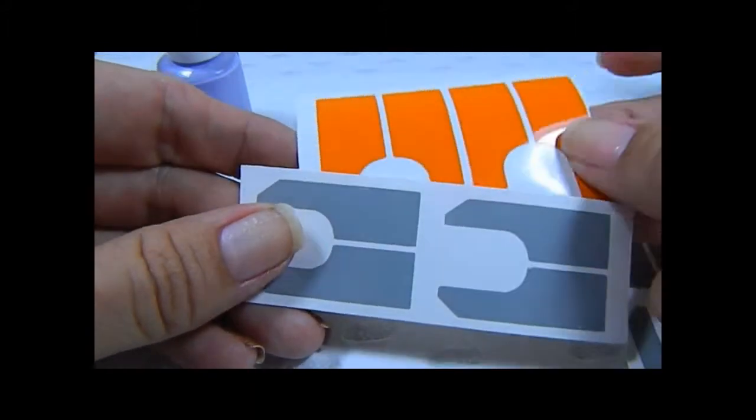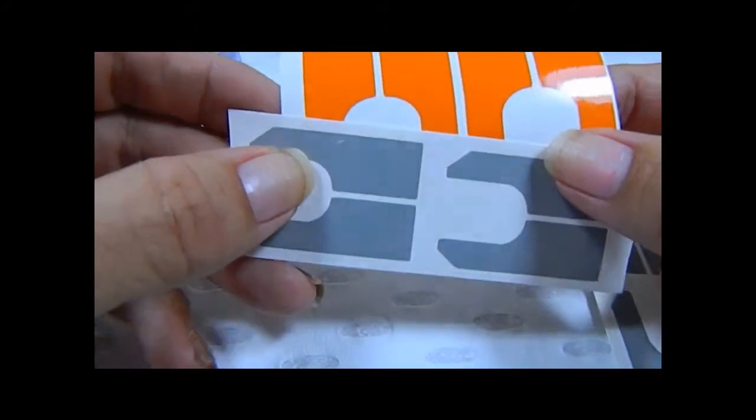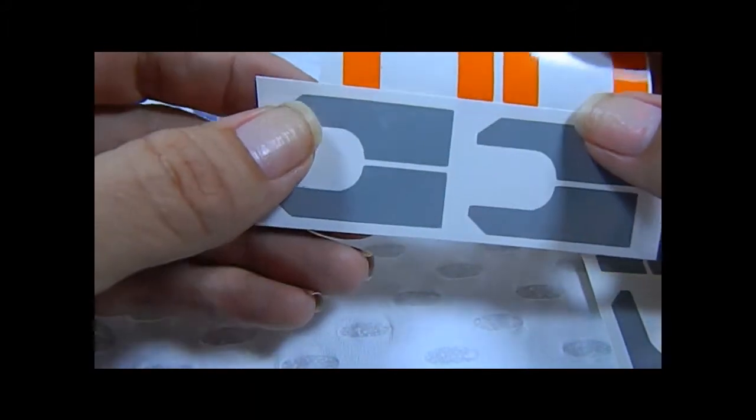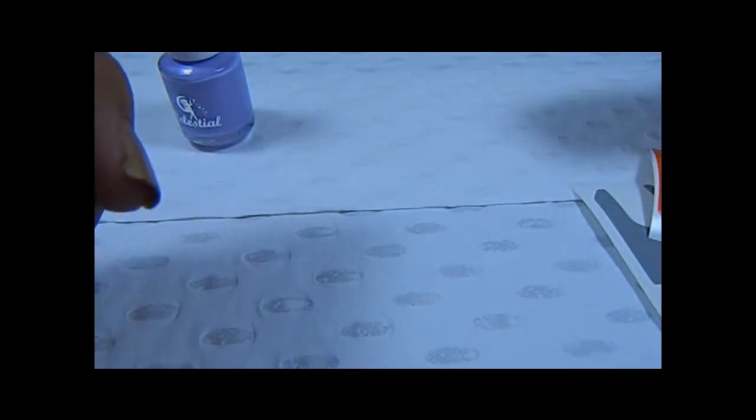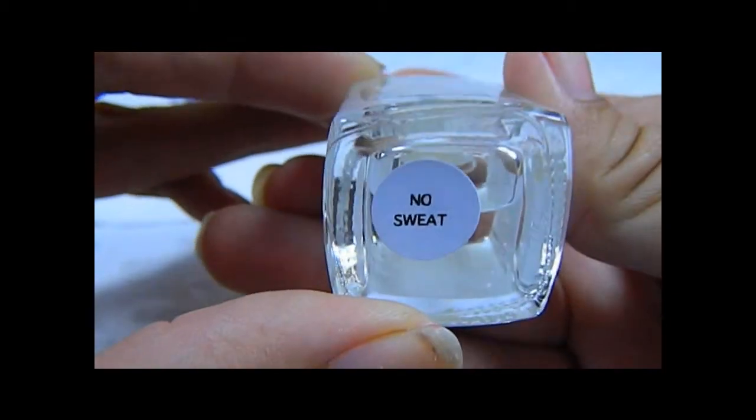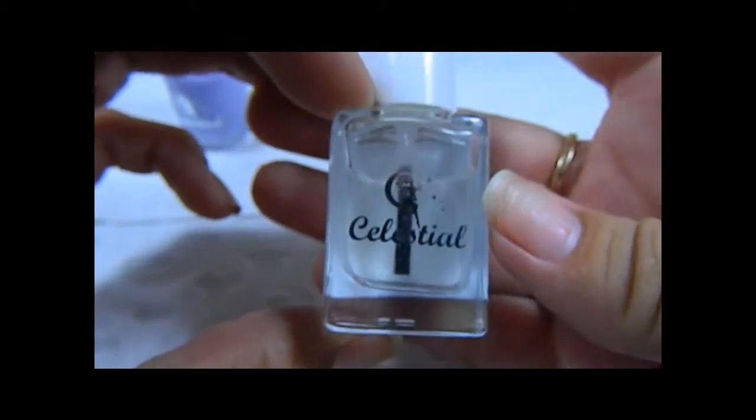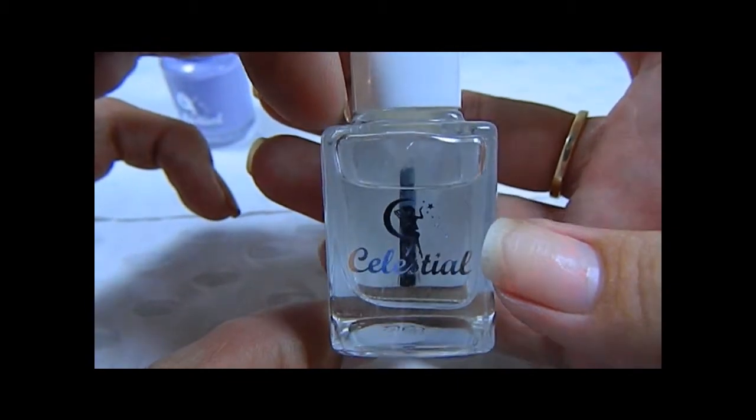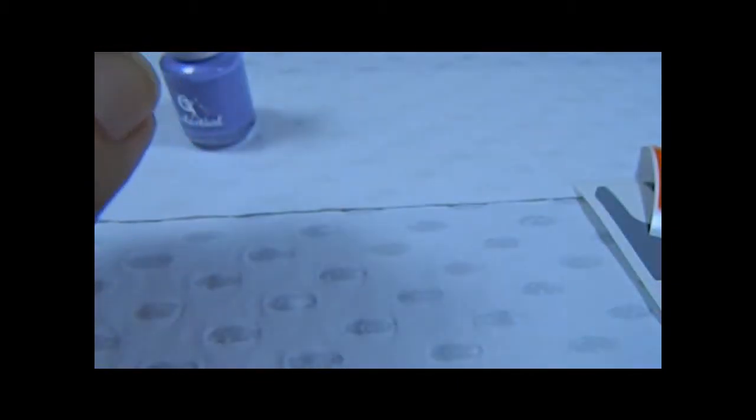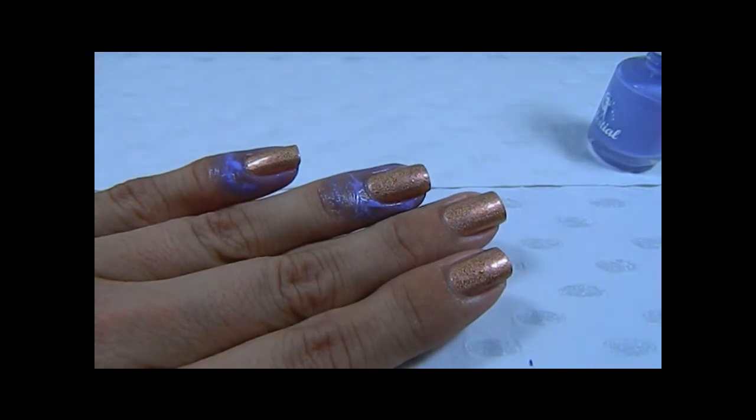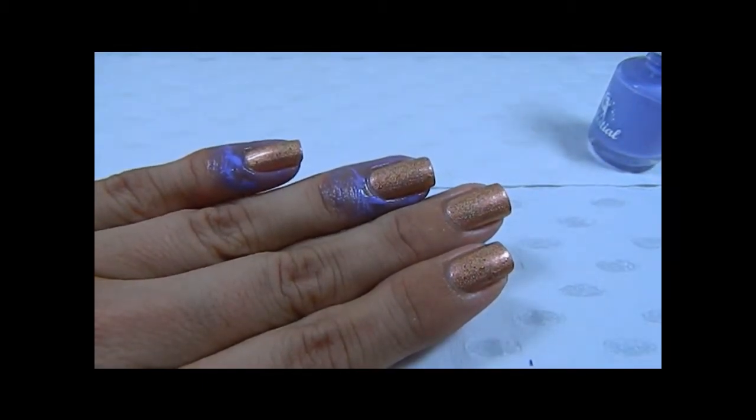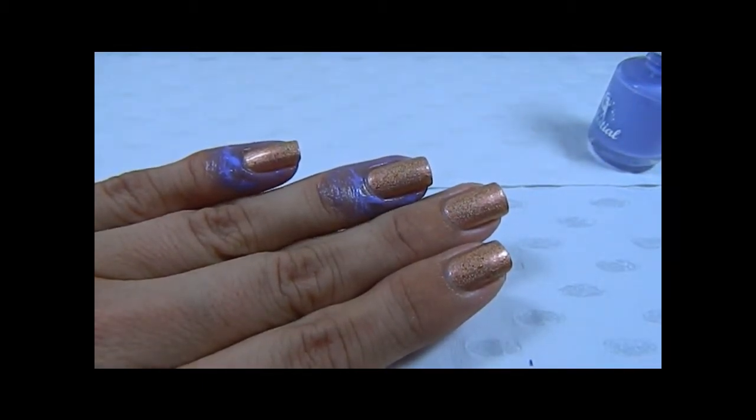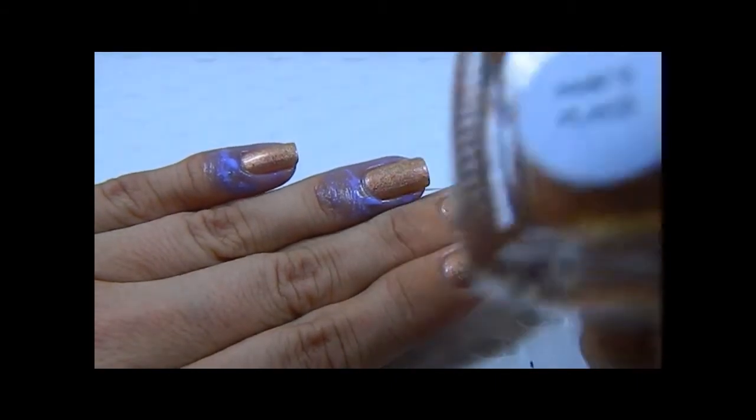And the third product is no sweat soy nail polish remover. So we'll have a look at them and I'll show you how they get used. So I have my base color on which is dry and ready to go.